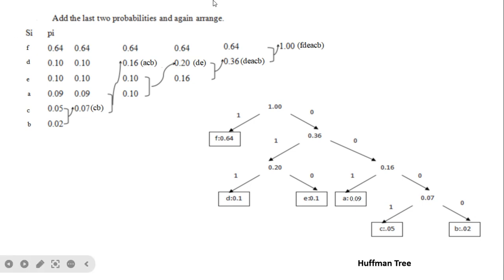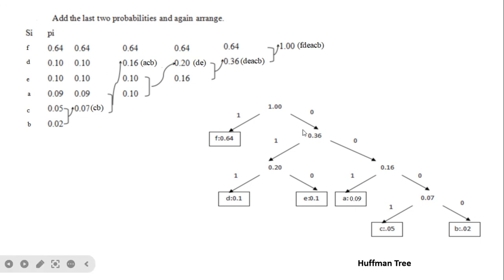We arrange the symbols F, D, E, A, C, B in descending order of probability. We add the last two probabilities 0.05 and 0.02, which becomes 0.07, representing C and B combined. When equal probabilities appear it is useful to write down the character names to avoid confusion while drawing the Huffman tree.